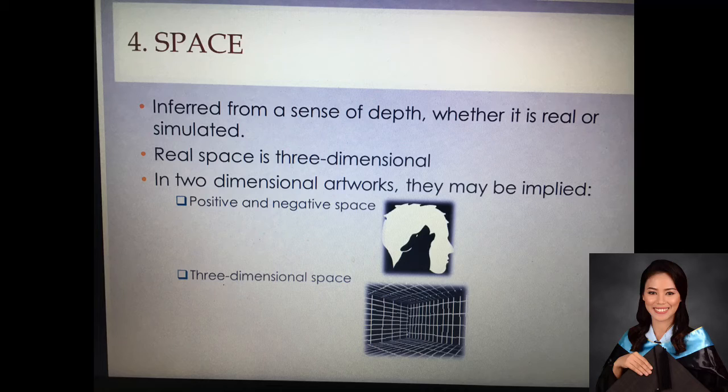The next type of space is the three-dimensional space. It can be simulated through a variety of techniques, such as shading. An illusion of three-dimensionality can be achieved in two-dimensional work. When you say three-dimensional, it refers to an artwork that has height, width, and depth. As you can see in the picture on the right side, it creates an illusion that you're actually in the area. You can see that there's floor, wall, and ceiling.